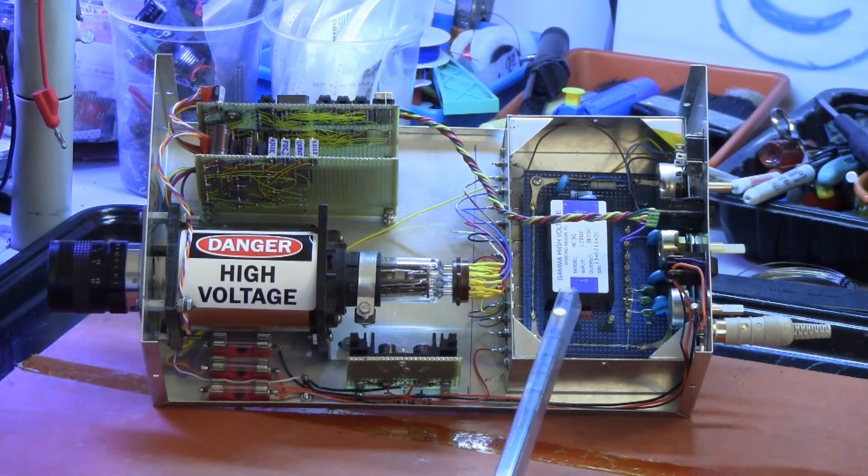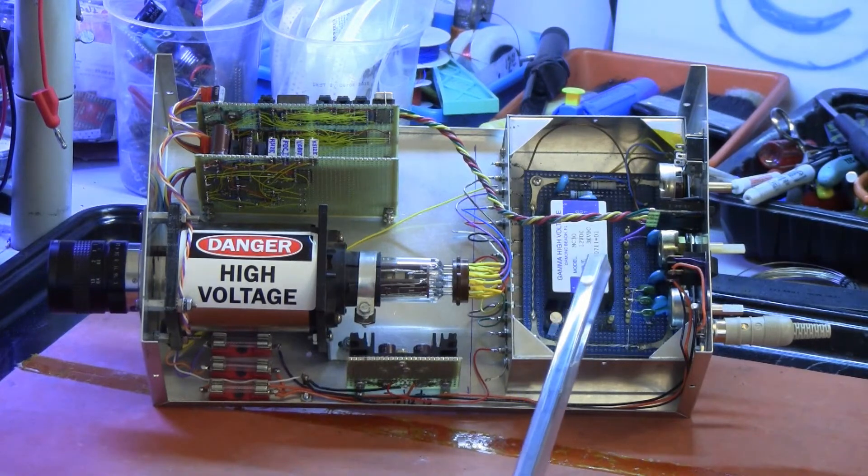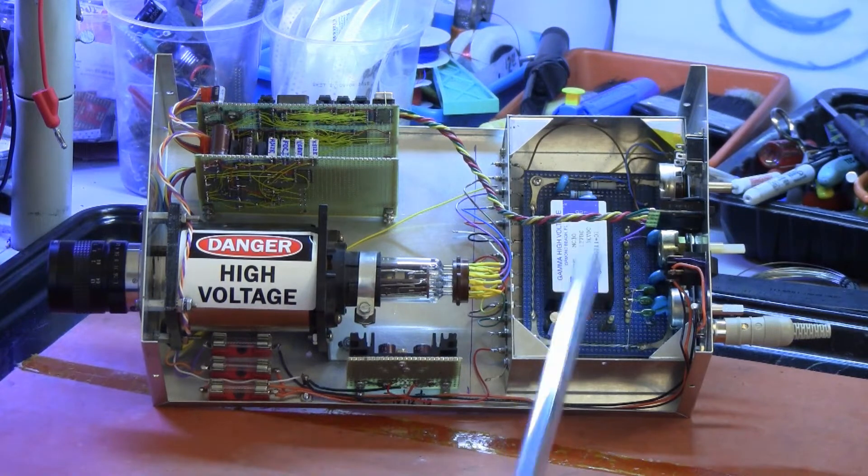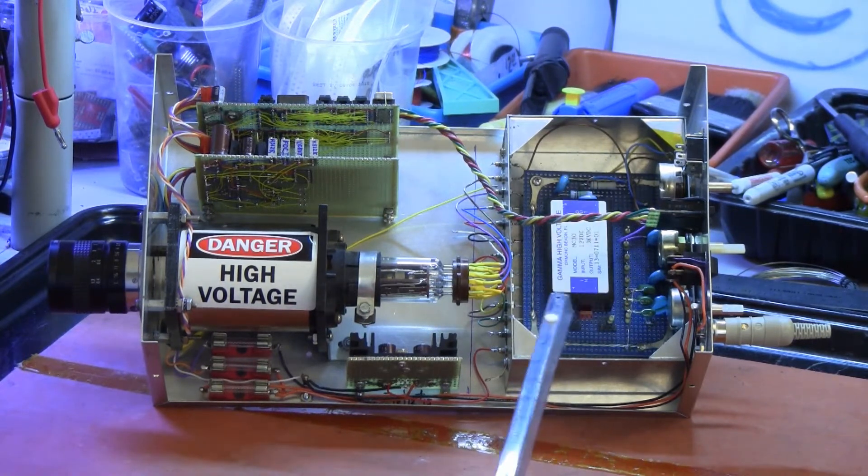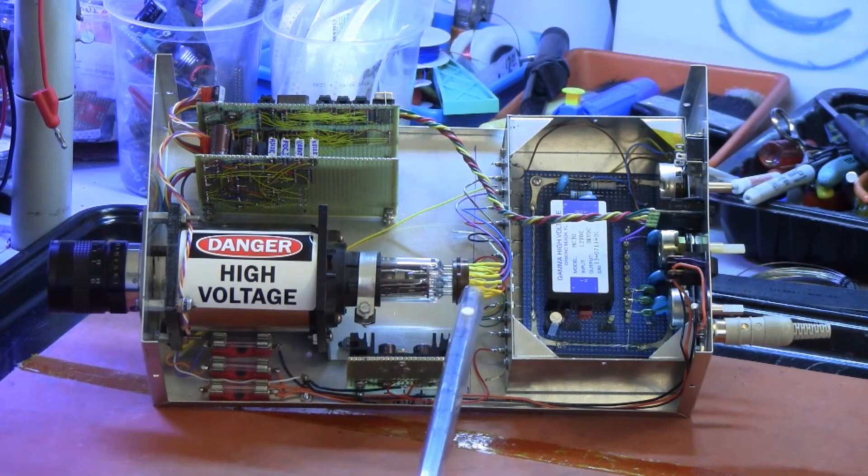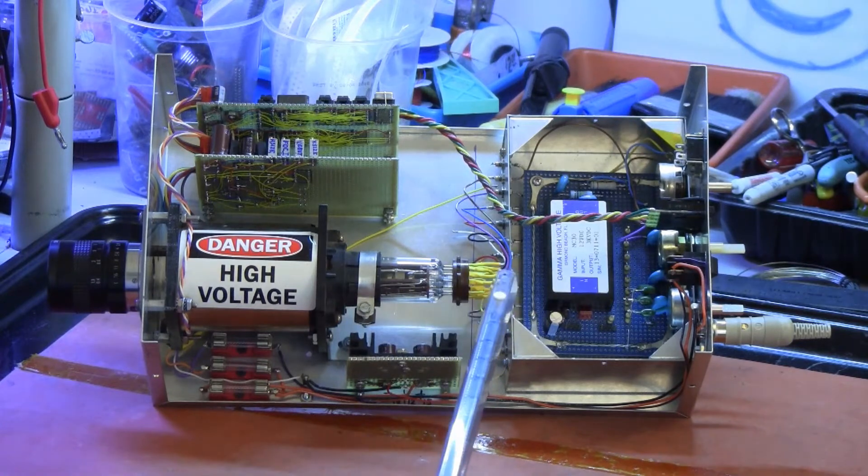So I'm going to be doubling the value of all of the resistors in that divider chain in order to cut the power consumption in half. All of the relative voltages will remain constant. That is the voltages that go to the elements in the tube itself. They will all remain the same.